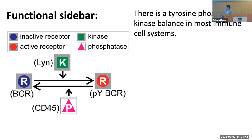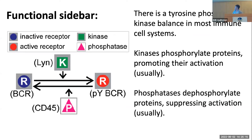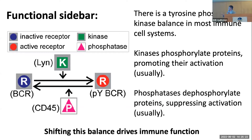In immune cells and many other types of cells, there's constantly a kinase-phosphatase balance. Things in the membrane are being phosphorylated by Lck kinase and dephosphorylated by CD45 phosphatase. There's constantly this competition, resulting in some steady-state level of phosphorylation of proteins in the membrane — most importantly, the B cell receptor. Usually if the kinases win, the cell will get activated; if the phosphatases win, they will not get activated. The key to immune function is shifting this balance so the kinase or phosphatase wins in different circumstances.